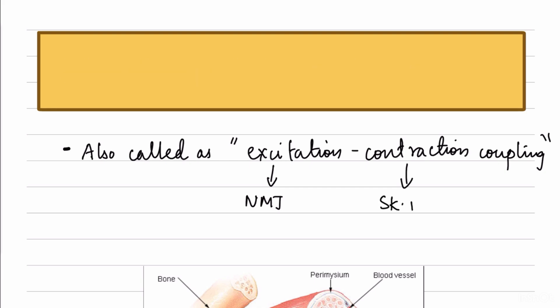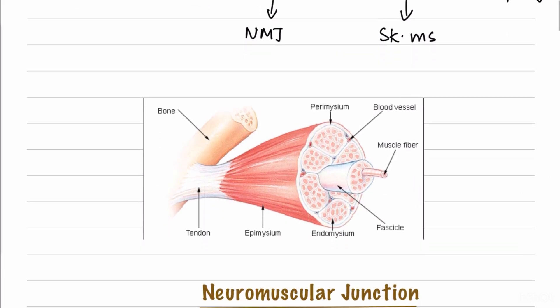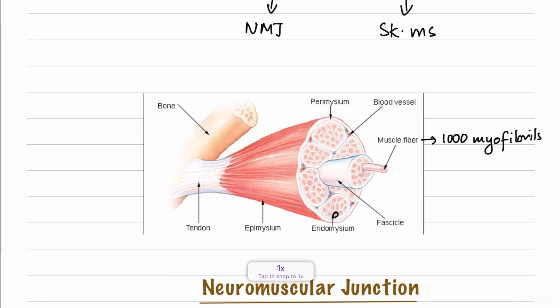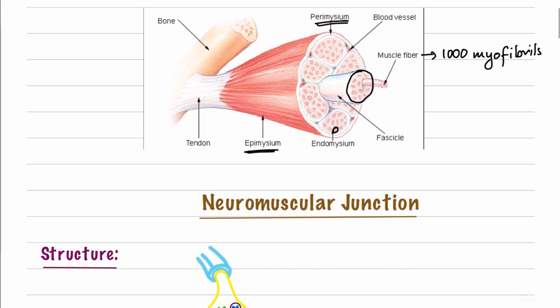Contraction occurs at the level of skeletal muscle fibers. The muscle fiber is made up of 1000 or more myofibrils consisting of actin and myosin filaments. These muscle fibers are surrounded by an endomysium layer, and several fibers are bundled together into a fascicle lined by the perimysium. Several fascicles form a skeletal muscle covered by the epimysium.